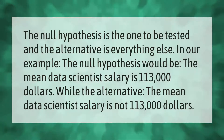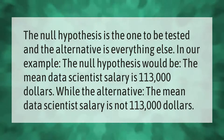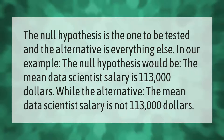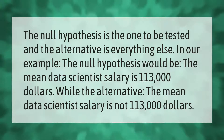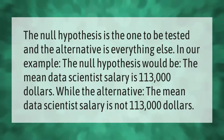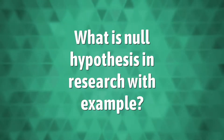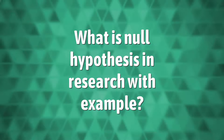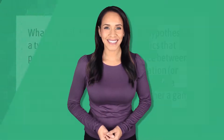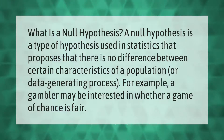The null hypothesis is the one to be tested, and the alternative is everything else. In our example, the null hypothesis would be: the mean data scientist salary is $113,000, while the alternative is: the mean data scientist salary is not $113,000.